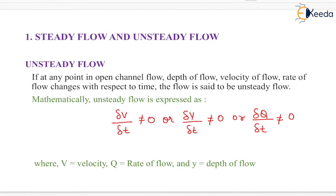Now unsteady flow: if at any point in open channel flow, depth of flow, velocity of flow, or rate of flow changes with respect to time, the flow is said to be unsteady flow. It means that if the change in velocity with respect to time is not equal to zero, or if the change in depth of flow with respect to time is not equal to zero, or if the rate of flow changes with respect to time and is not equal to zero, then it is known as unsteady flow.